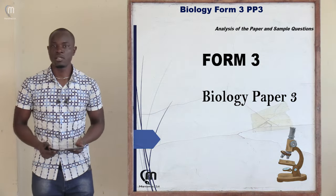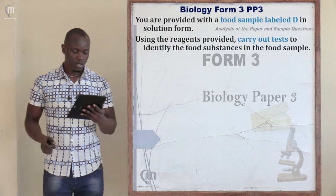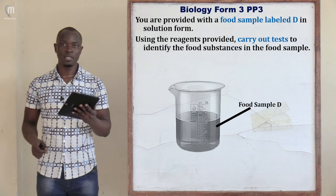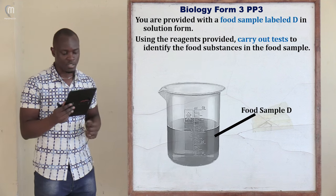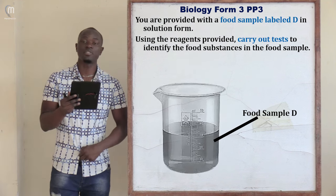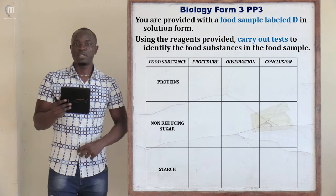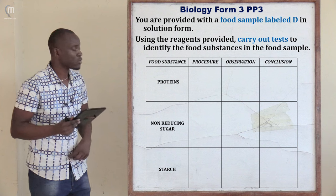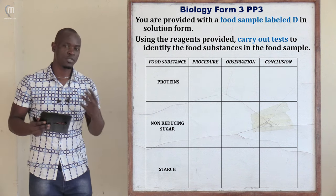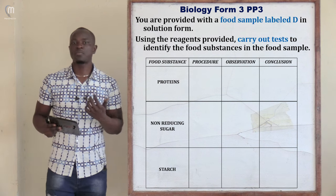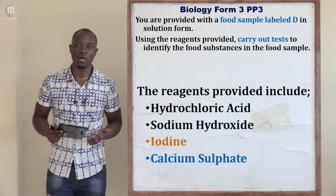Let's look at Biology Paper 3 Form 3. The first question provides a food sample label D in solution form, and asks you to use the given reagents to identify the food substances in the sample. You are given a table to fill in, which contains proteins, non-reducing sugar, and starch. This practical question tests knowledge of food tests studied in Form 1.